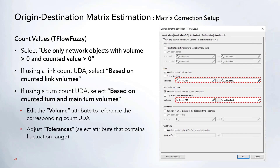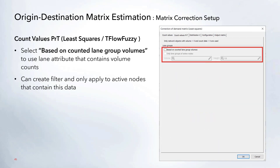For T-Flow Fuzzy the options are mostly the same, with the main difference being that instead of a weight on the right-hand side, there is a tolerance. This is where you can select an attribute containing a fluctuation range that the procedure uses. The next tab, Count Values PRT, is the same for both options and allows you to add volumes for individual lanes. You can also apply a filter — checking the 'Active Nodes' option creates a filter for only nodes that contain lane-based data, so the correction is only performed for those specific locations.